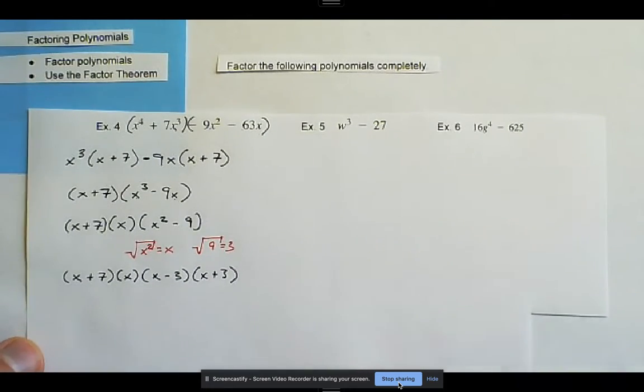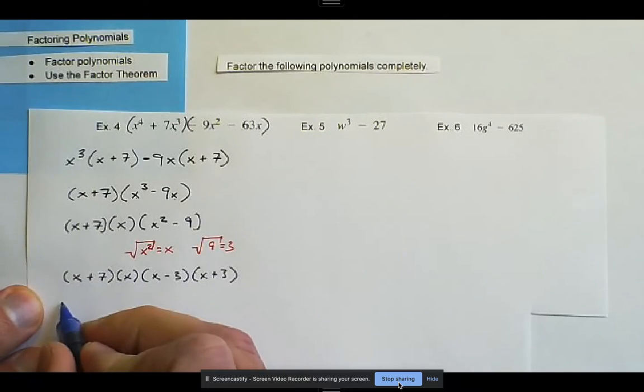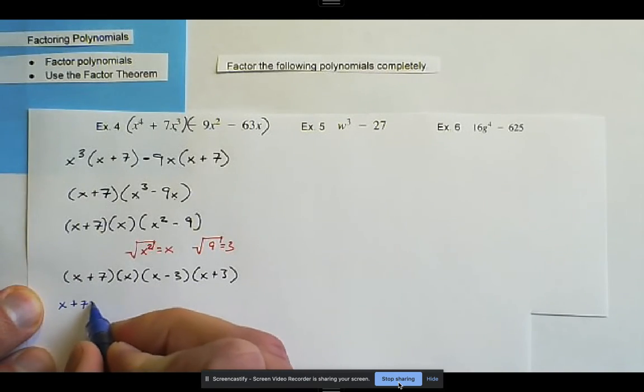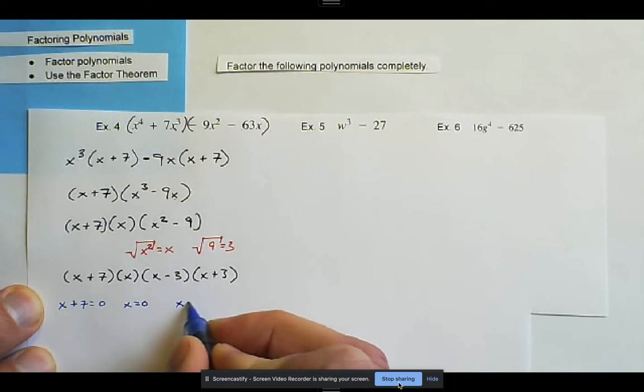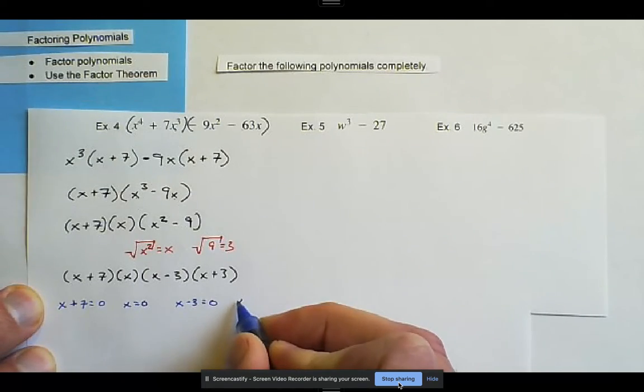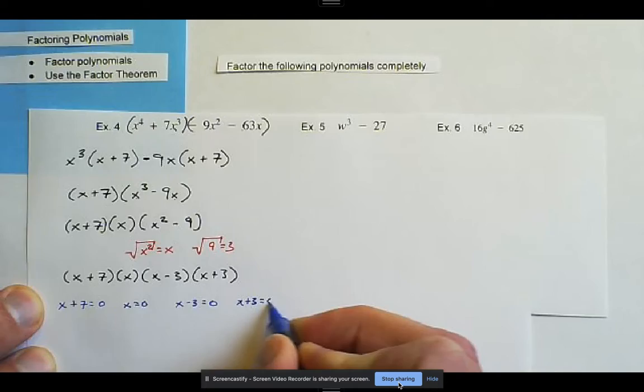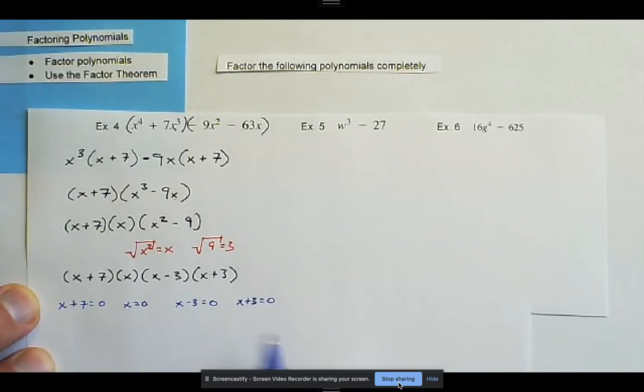Now we can use the zero product property. X plus seven equals zero, x equals zero, x minus three equals zero, and x plus three equals zero.